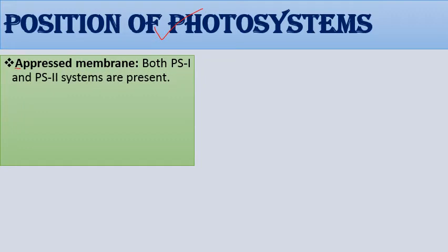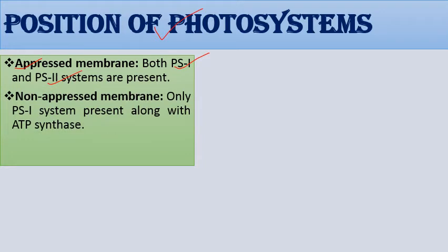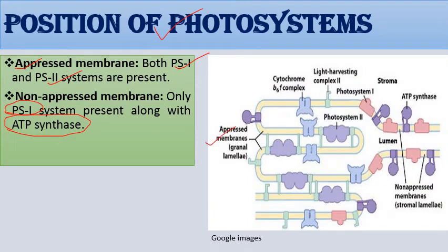Photosystems are specially arranged in thylakoid membranes. In the appressed membrane (grana), both photosystem 1 and photosystem 2 are present. In the non-appressed membrane, only photosystem 1 is present along with ATP synthase.